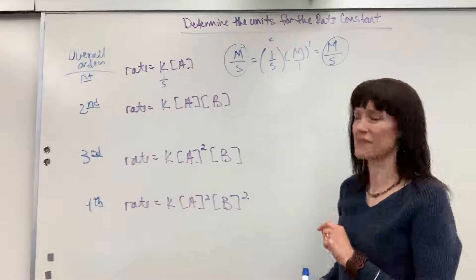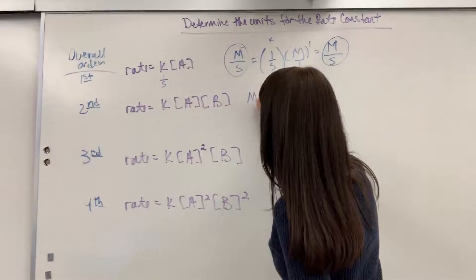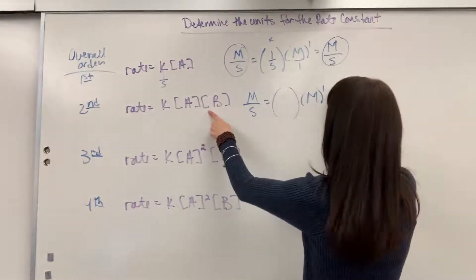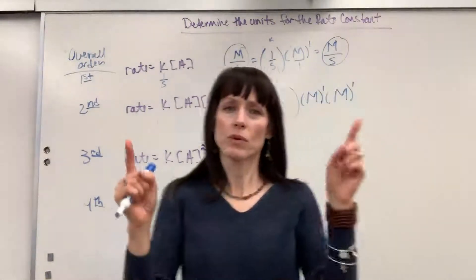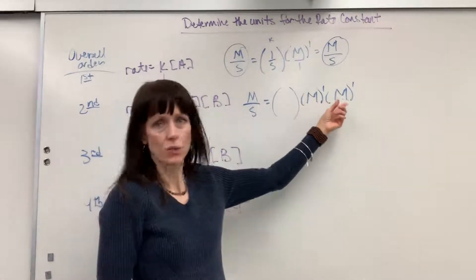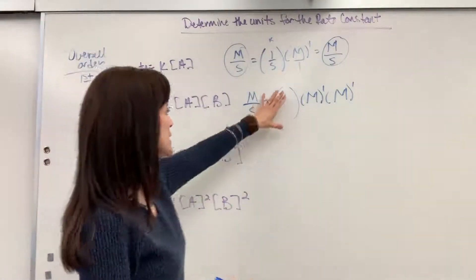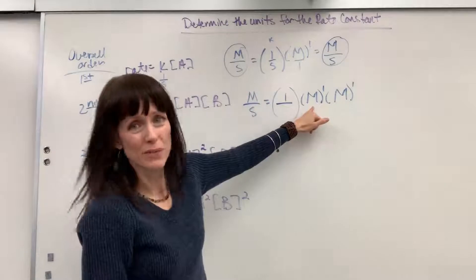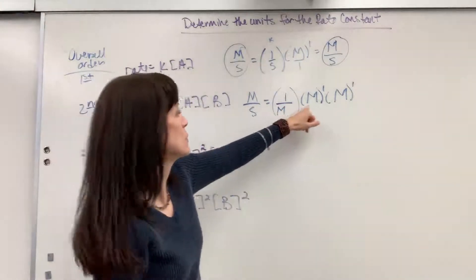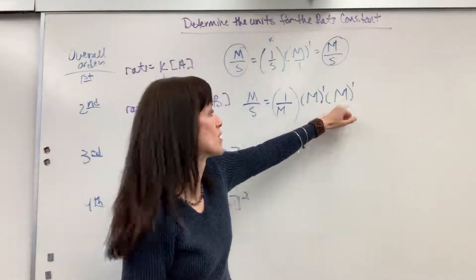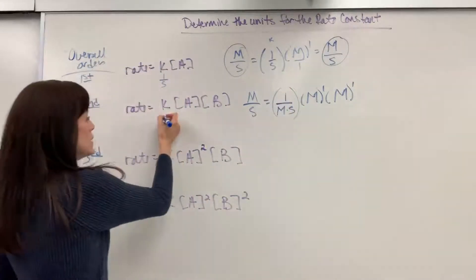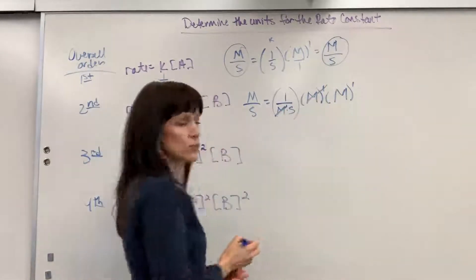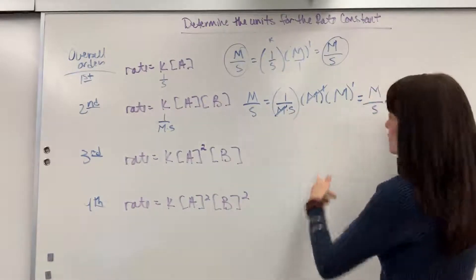For a second order reaction: molarity per second equals K's unit times molarity times molarity — that's molarity squared total. I need to end with one molarity on top and second on the bottom. So I put molarity in the denominator of K's unit to cancel one molarity, leaving one molarity left, plus second on the bottom. The unit for K is 1 over molarity times second. Checking the math: molarity cancels, leaving molarity over second. Nice.